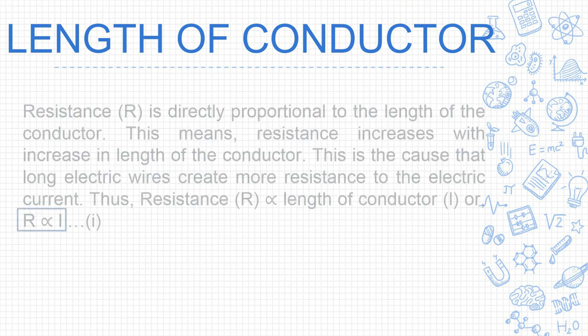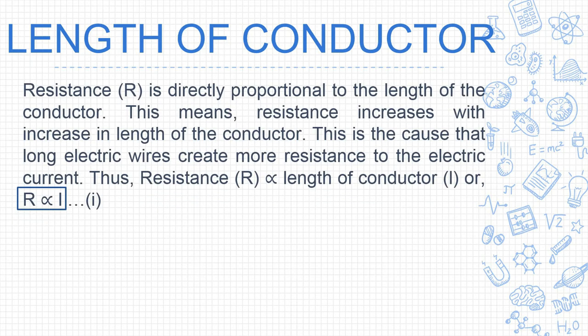The next factor is length of the conductor. Resistance is directly proportional to the length of the conductor. The greater the length, the greater the resistance. As the length increases, resistance increases, and therefore the electric current decreases. This is why long electric wires create more resistance.